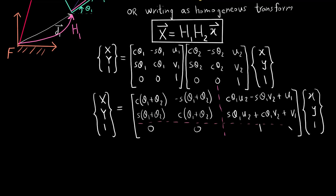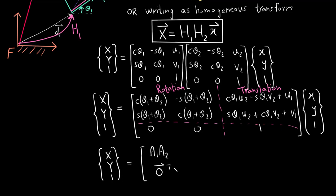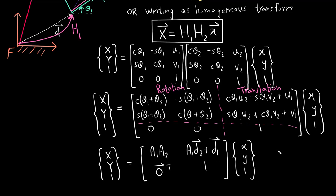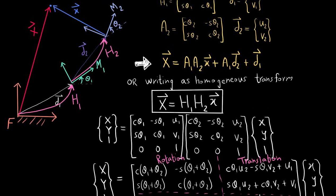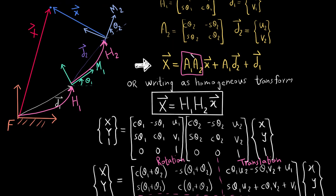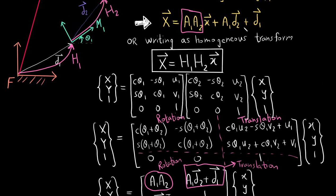Dividing this multiplied matrix into four parts, the left part gives the rotation matrix and the right part gives the translation vector. Observing it, the rotation part equals a1·a2 and the translation part equals a1·d2 plus d1. Comparing with the equation above, a1·a2 was indeed the rotation term and a1·d2 plus d1 was the translation part.